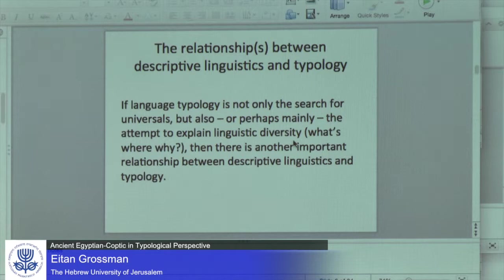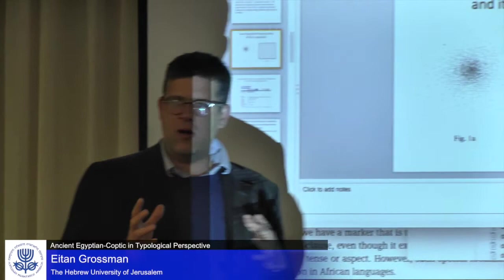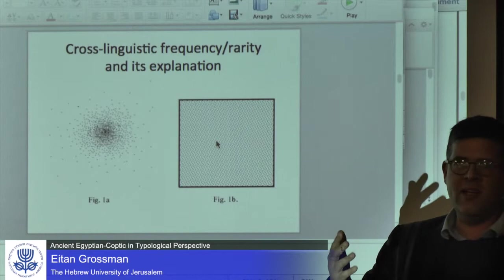Here we turn to what Balthasar Bickel characterized as the turn towards typology as diversity linguistics — the attempt to answer what's where and why. This highlights another important aspect of the relationship between descriptive linguistics and typology. This is a well-known diagram taken from Matthew Dreyer's discussion of absolute versus statistical universals. Dreyer says we could think that typology is about finding out what possible languages are, defining this space. A naive assumption might be that linguistic structures are distributed either randomly or evenly.